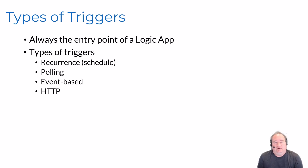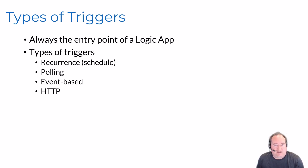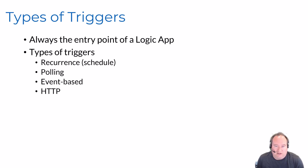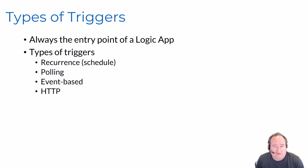There are a couple different types of triggers we should know about. We have recurrence triggers, which is essentially a way to schedule a logic app to run on a set interval. We have polling triggers where the logic app will at a periodic interval go out and look for data to consume - so this could be like a SQL trigger that calls out to a stored procedure to look if new records are available, or like checking for new data in a service bus queue.